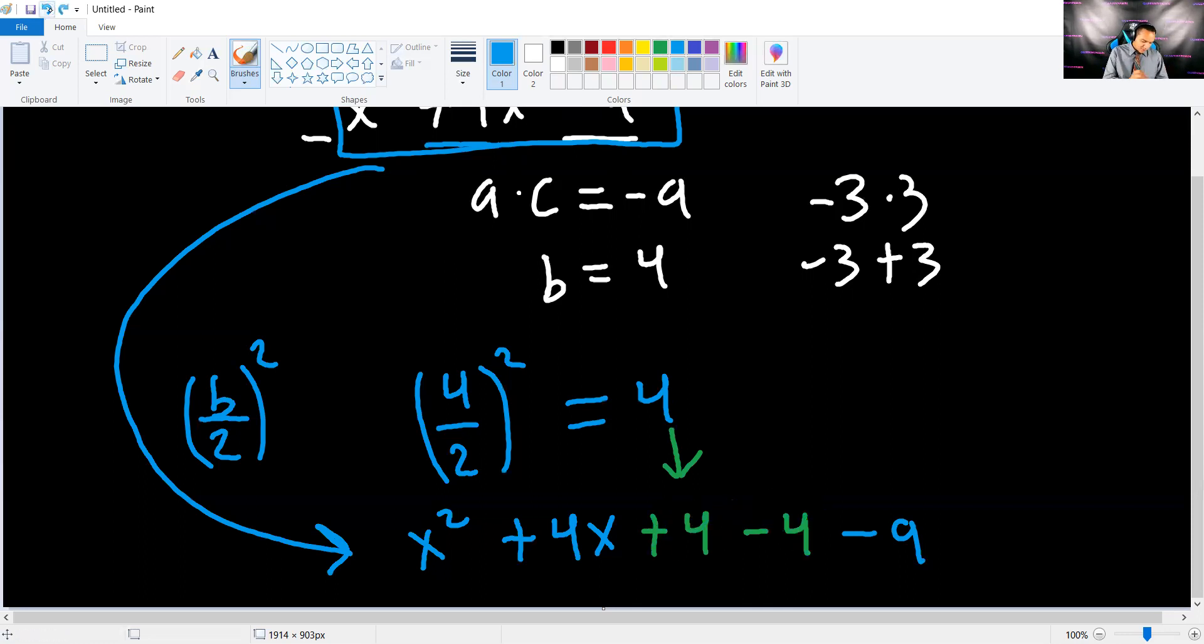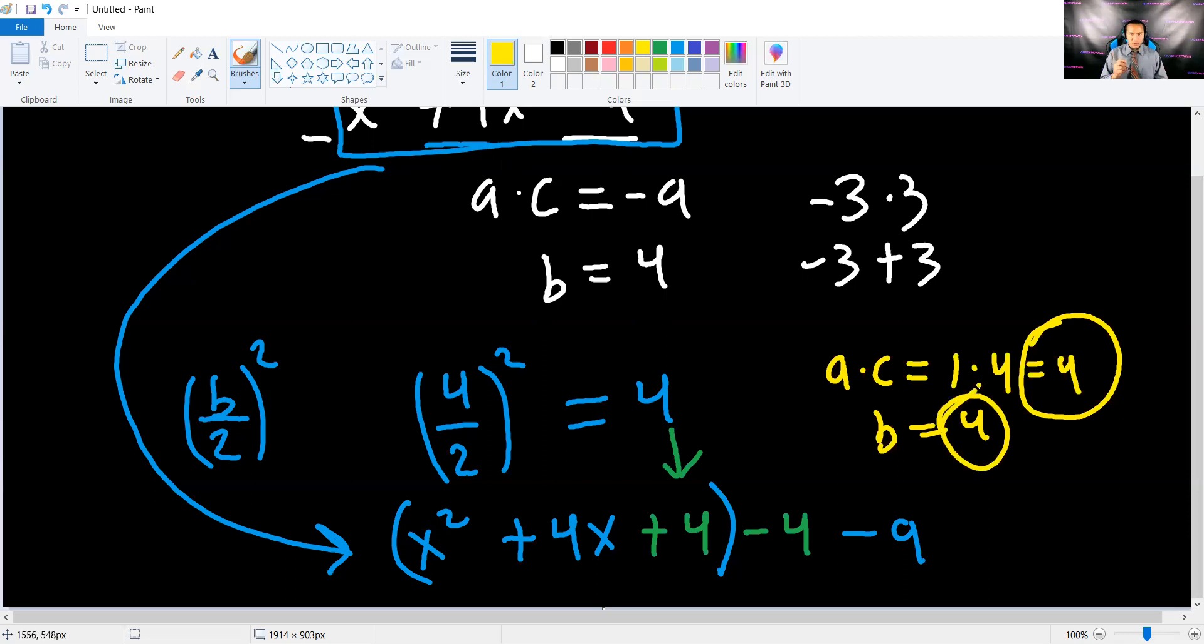But I added it because now look at this. For the polynomial inside the parentheses, now we should find 2 numbers that multiply to a times c, which is 1 times 4, which is 4. And they also add up to b, which is also 4. You should pause the video and try to find 2 numbers. They multiply to 4, a times c, and they add up to 4, which is b. You should have come up with 2 and 2.